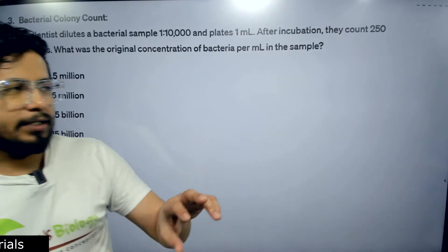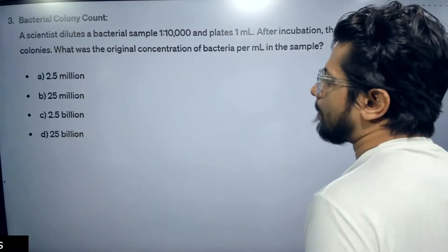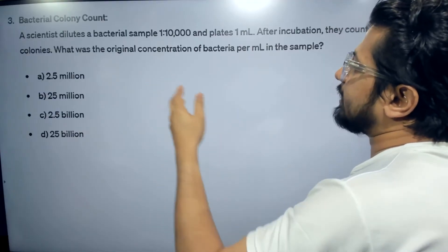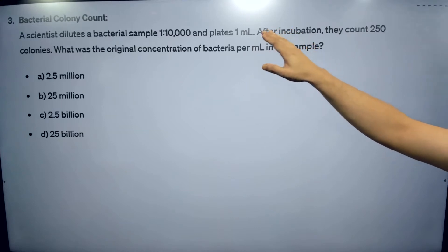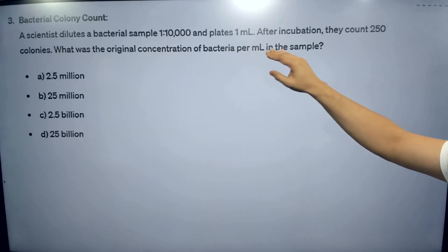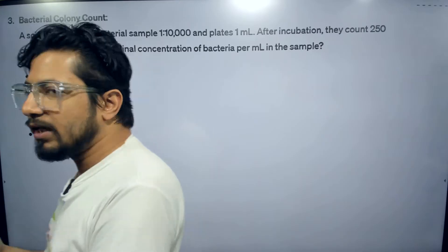Let us move on to the next category of question. And next category of question is basically serial dilution problem, bacterial colony count and serial dilution problem. A scientist dilutes a bacterial sample 1 is to 10,000 and plates 1 ml of it. After incubation, they count 250 colonies. What was the original concentration of bacteria per milliliter in that sample? So this is a typical serial dilution problem.